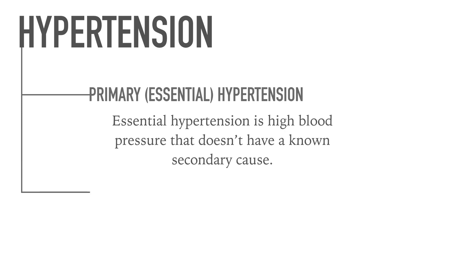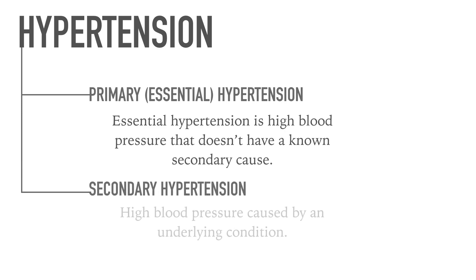The second type is secondary hypertension. Some people have high blood pressure caused by an underlying condition. This type tends to appear suddenly and causes higher blood pressure than primary does. Various conditions and medications can lead to secondary hypertension.